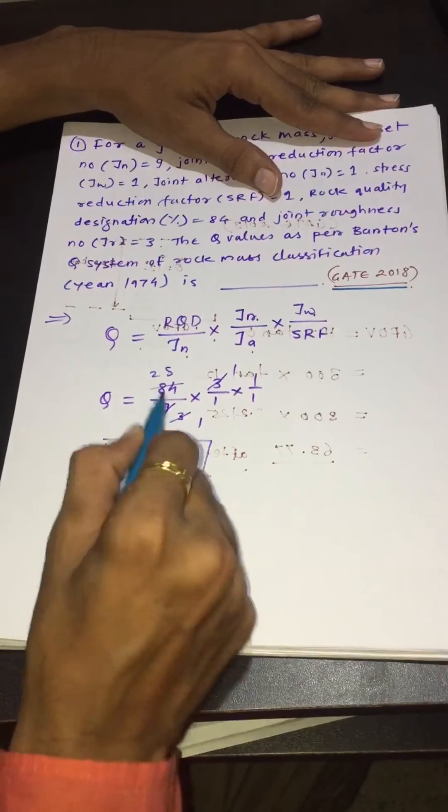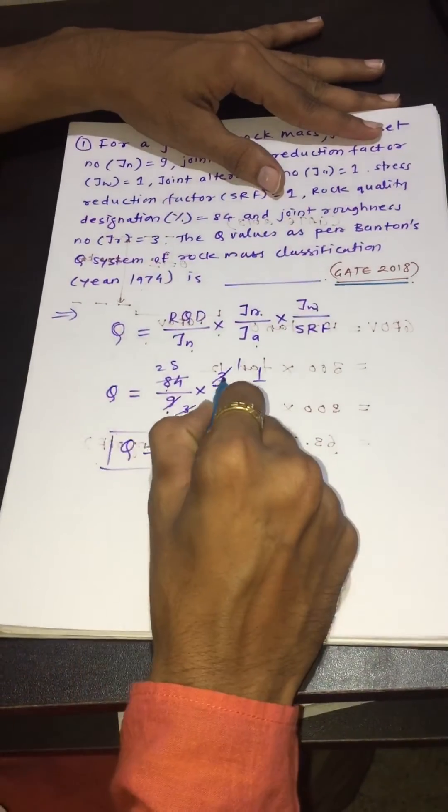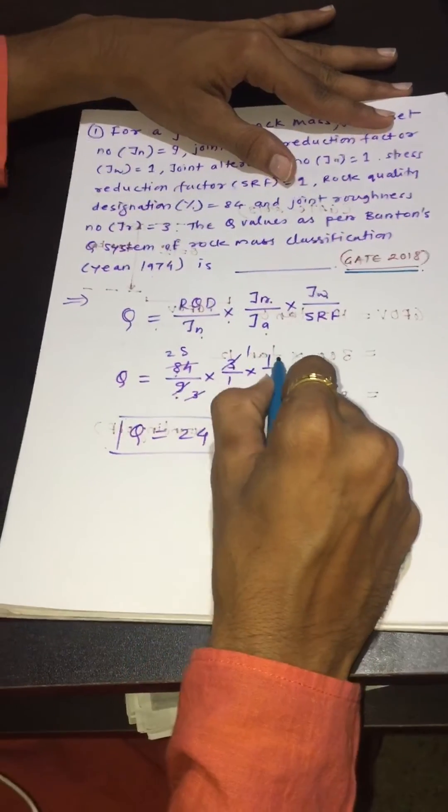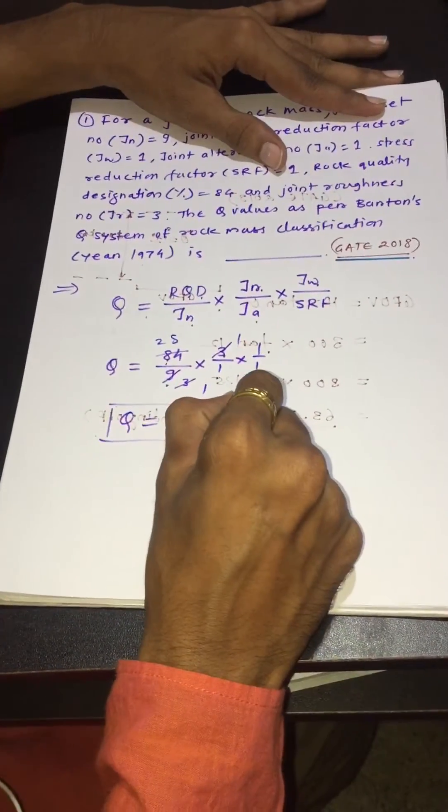RQD is 84 divided by Jn which is 9, multiplied by Jr which is 3 divided by Ja which is 1, multiplied by Jw which is 1 divided by SRF which is 1.